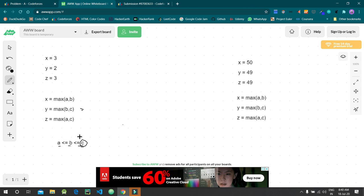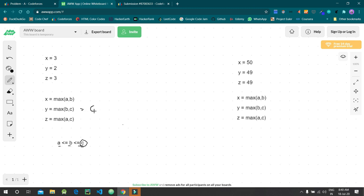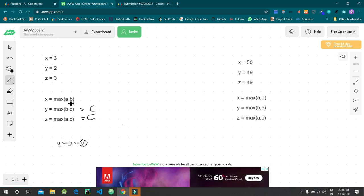When we look at this condition and see the value, by the condition the value of c is greater than or equal to b, then y would equal c and z would also equal c. Now for x equals max of (a, b), the value of b is greater than or equal to a, so x would equal b.